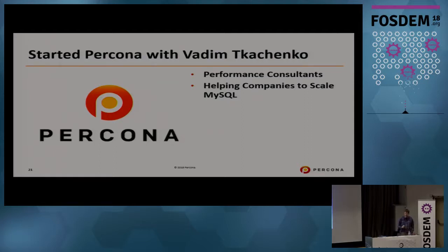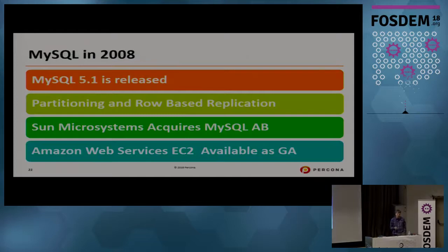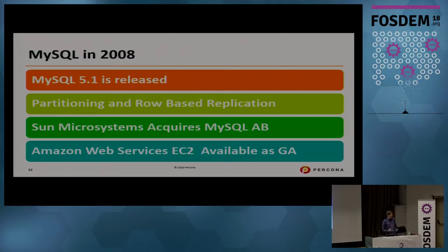In 2008, MySQL 5.1 came out, including features like partitioning and row-based replication — because it was understood that MySQL needed safer, more mature replication technology. Statement-based replication had limitations. We also saw Sun Microsystems acquire MySQL AB — the first acquisition in MySQL's history.